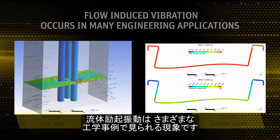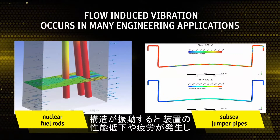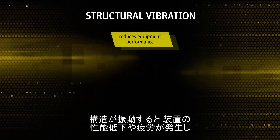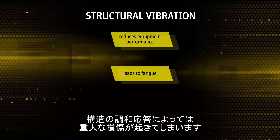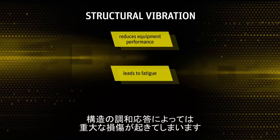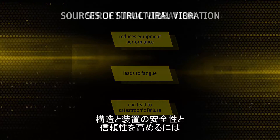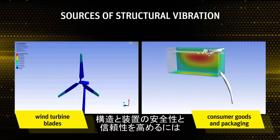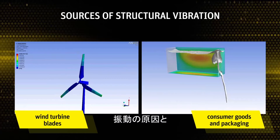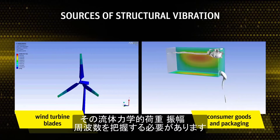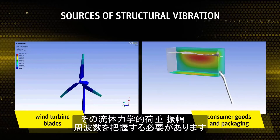Flow induced vibration occurs in many engineering applications. Structural vibration reduces equipment performance and leads to fatigue, and under certain harmonic responses of the structure can also lead to catastrophic failure. Engineers must understand the sources of structural vibrations and the related fluid dynamic loads, amplitudes, and frequencies in order to design safer, more reliable structures and equipment.